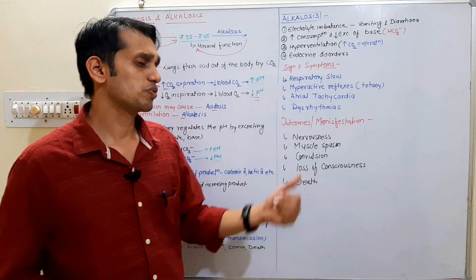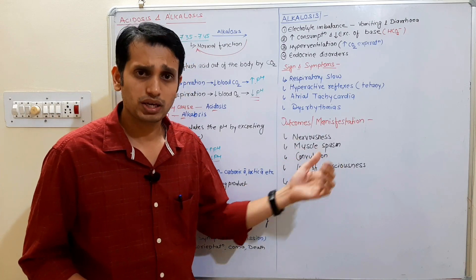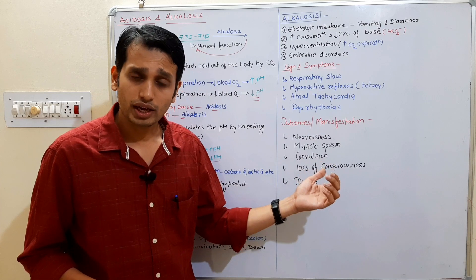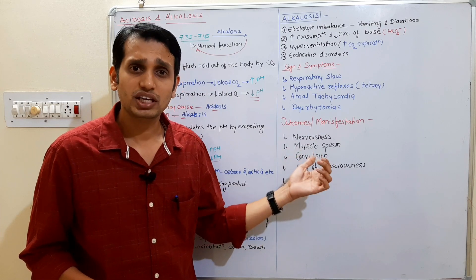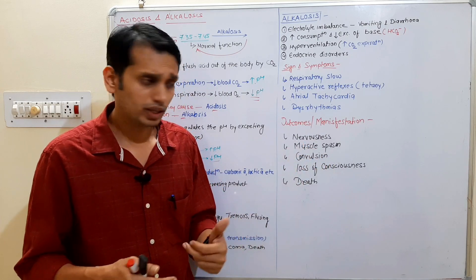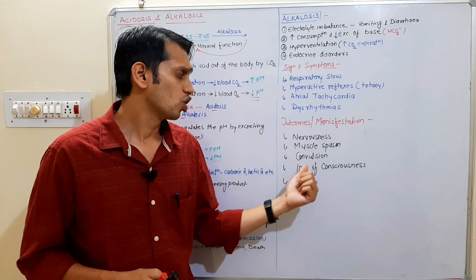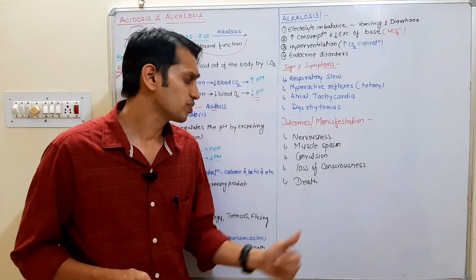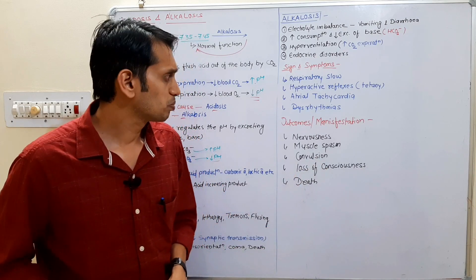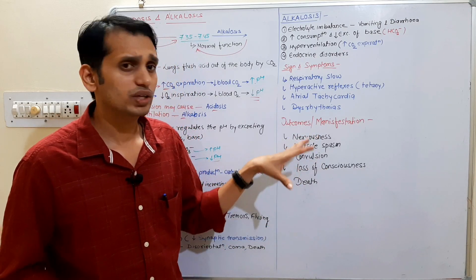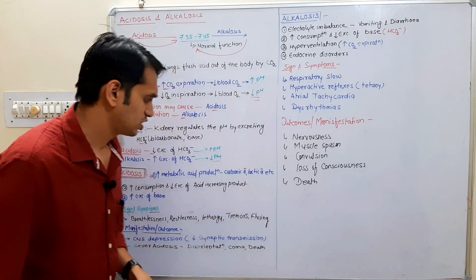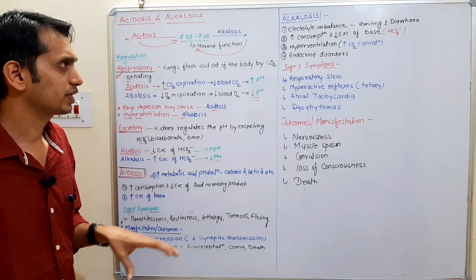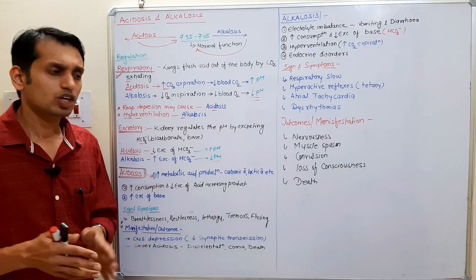The outcomes of alkalosis include nervousness, muscle spasm like tetany, convulsions — meaning epilepsy or seizure — loss of consciousness, and death. These are the basic outcomes of alkalosis. So these are the basic things about acidosis and alkalosis. Short questions on this topic may come in exams.